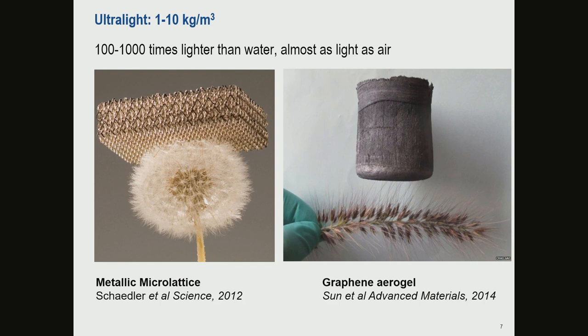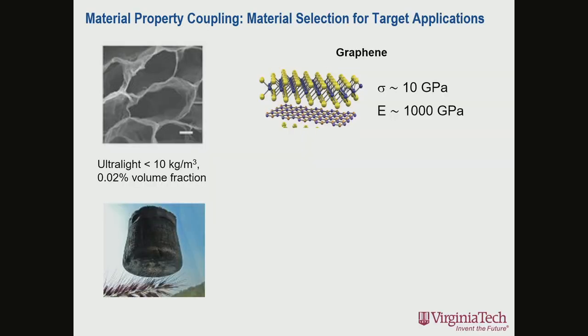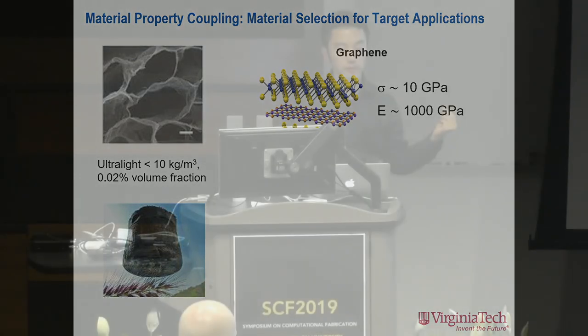These ultra-lightweight materials are made from heavy materials. One shown here is a metallic micro-lattice made out of nickel phosphorous — a metal with density over 8,000 kilograms per cubic meter — yet you can reduce the weight by over two orders of magnitude. You can see it supported on top of a dandelion. The other material looks like a stone but is actually a graphene aerogel that can be supported by a plant. The key is making the solid ligament inside the porous structure slender — reducing thickness to below hundreds of nanometers — leaving over 99% of the volume filled by air.